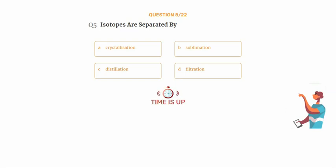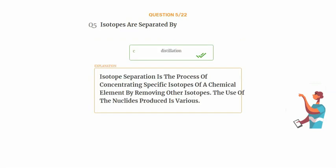The correct answer is Option C: Distillation. Isotope separation is the process of concentrating specific isotopes of a chemical element by removing other isotopes. The use of the nuclides produced is various.